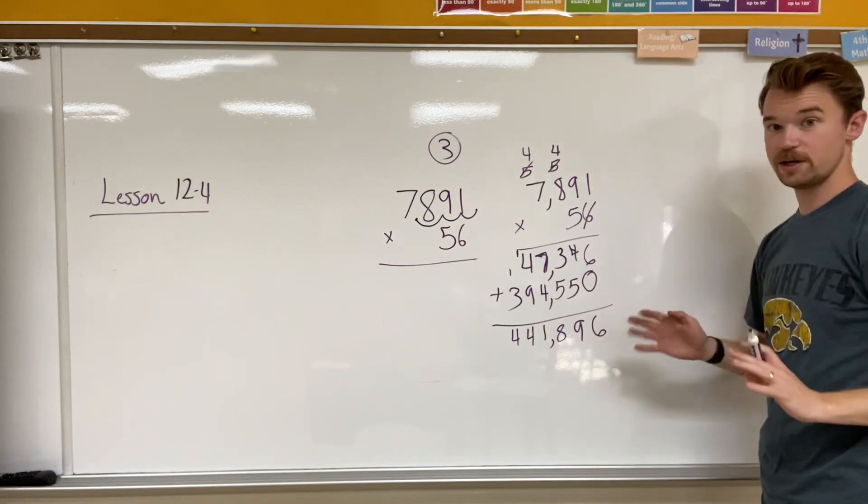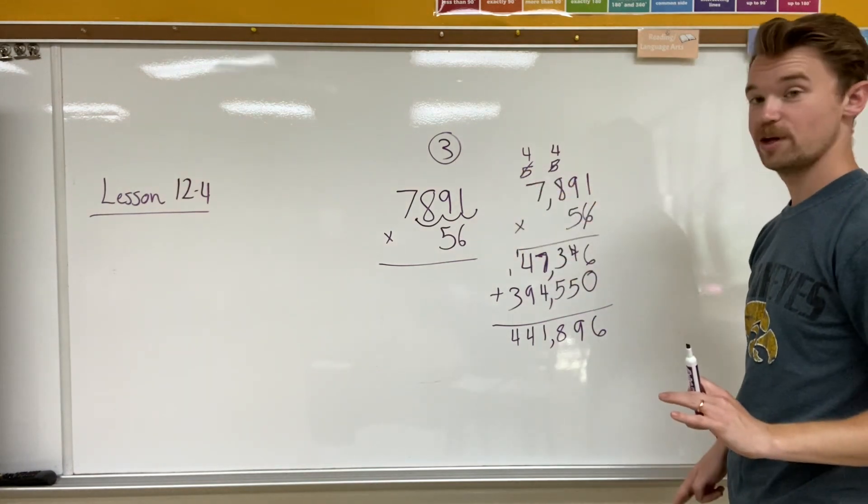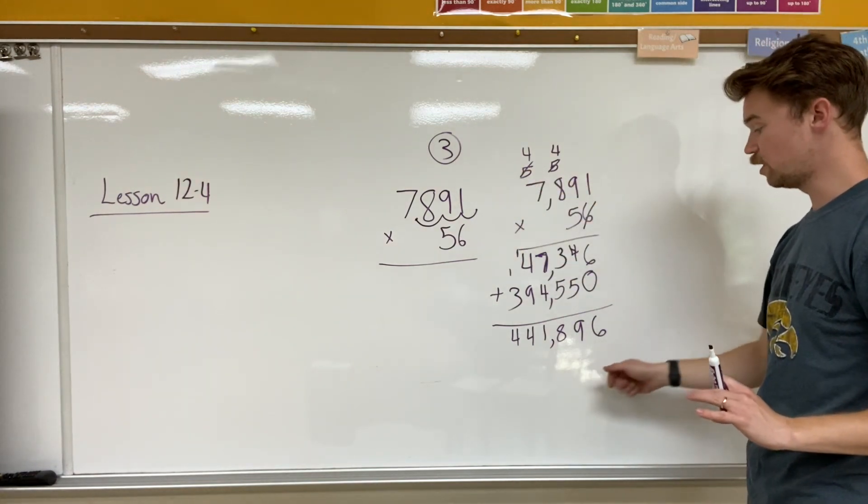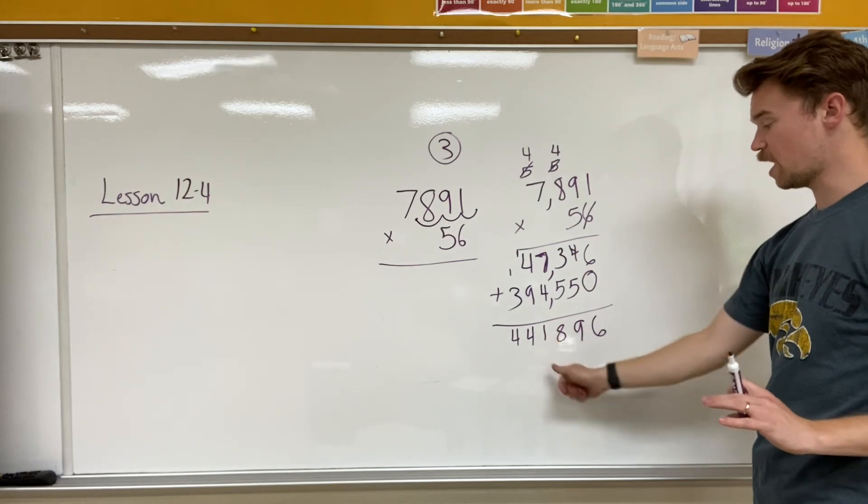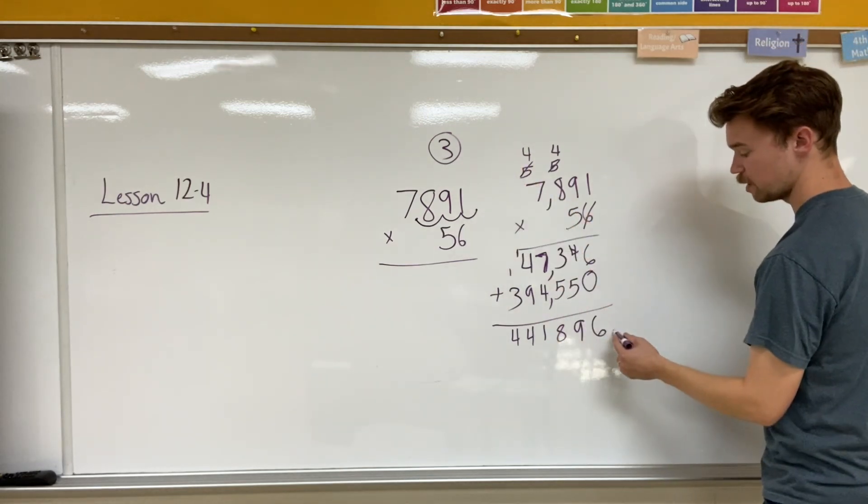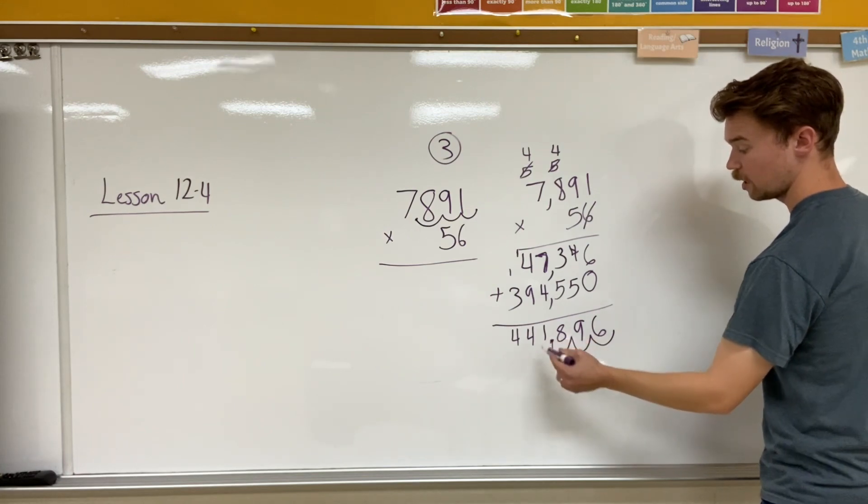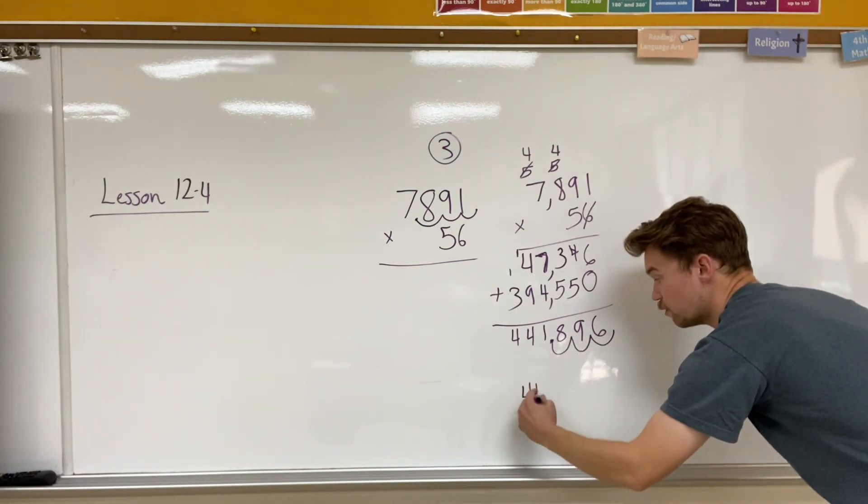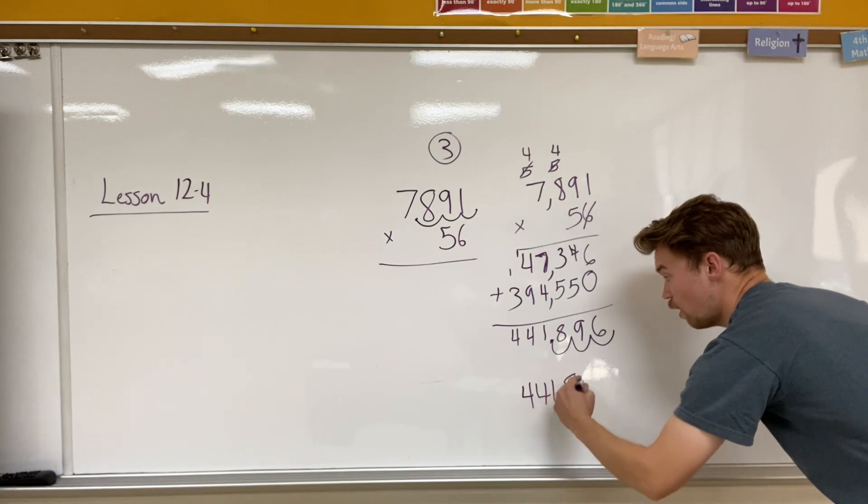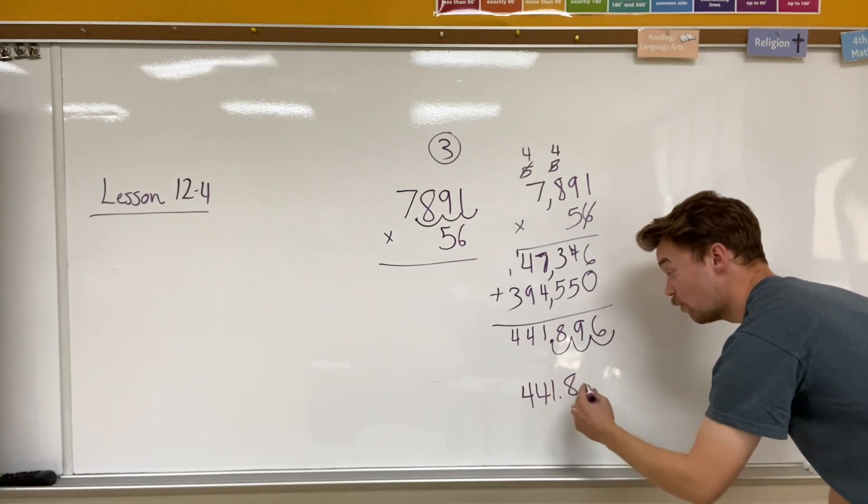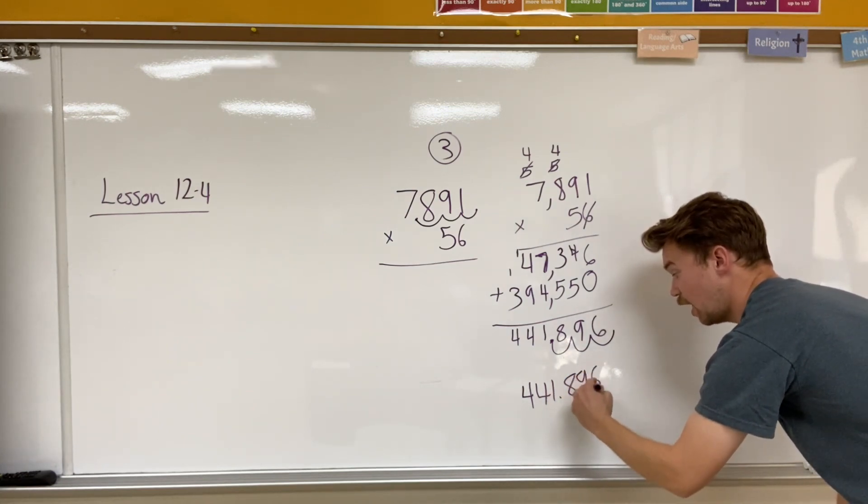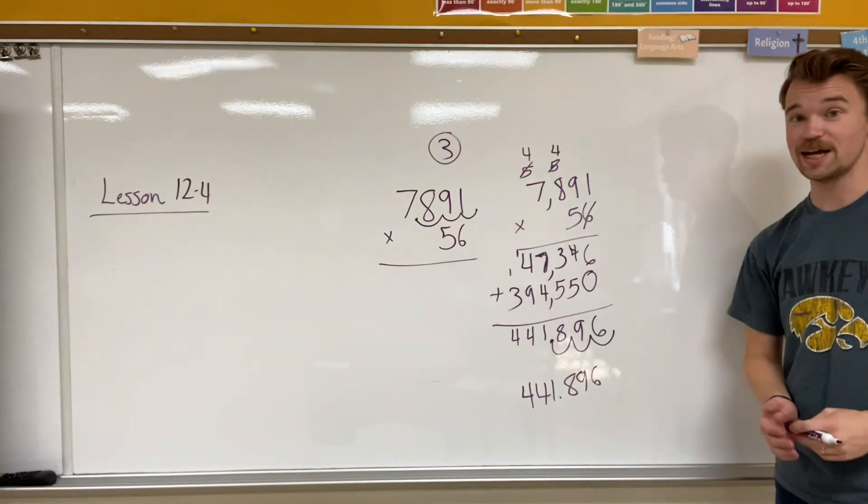So now here's the part where I have to move my decimal three places over. So actually, I don't need that comma right now. I'm going to start from the end, go three places over to left. One, two, three, put my decimal point. So I should have 441 and 896 thousandths.